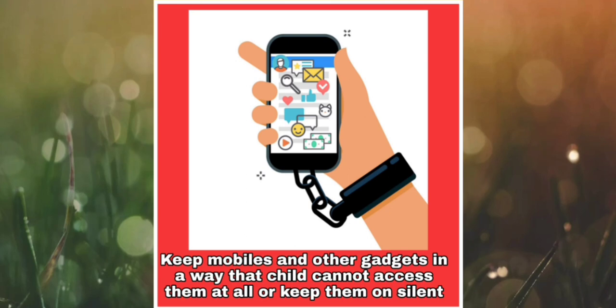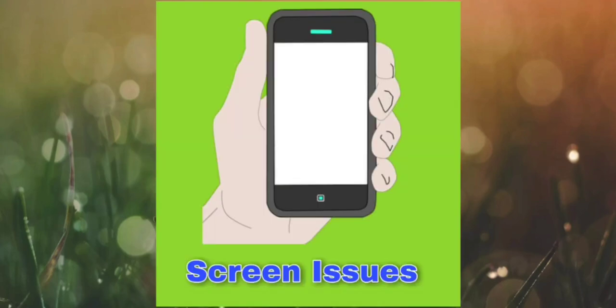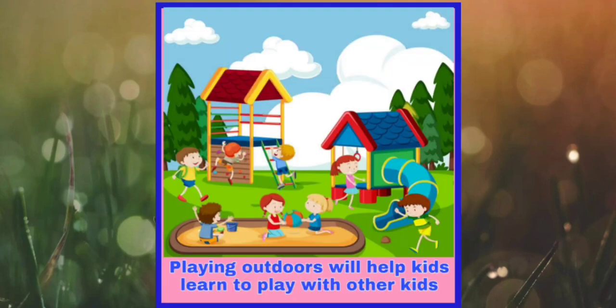You can give reasoning to your child when they ask about the mobile — like you can say the battery is down or there are screen issues. Anything you find suitable for your child. Playing outdoors will help kids learn to play with other kids. At the same time it also helps them build their motor skills when they run around and engage in some outdoor play.